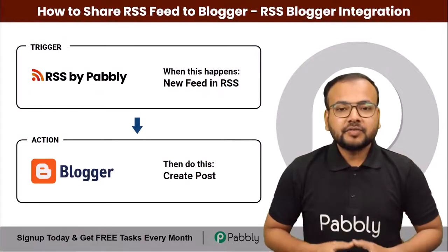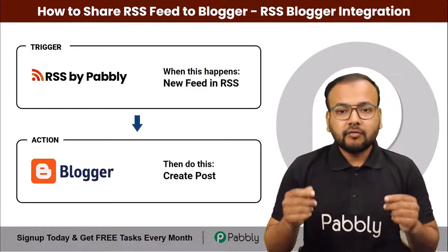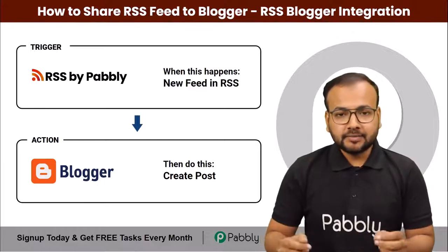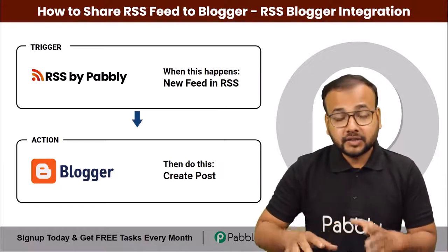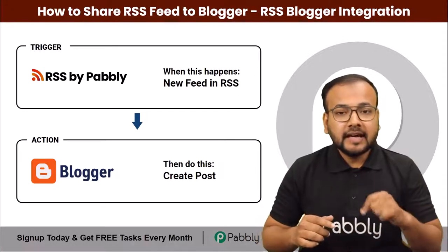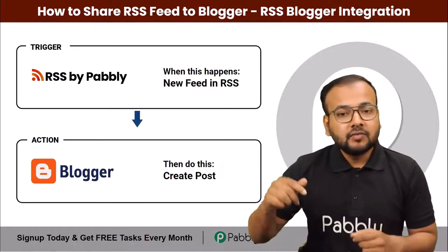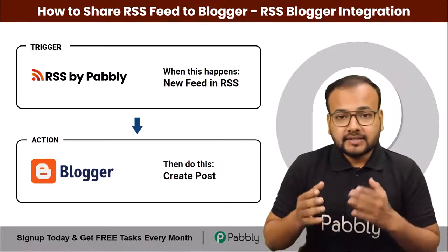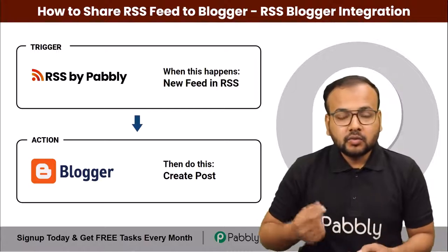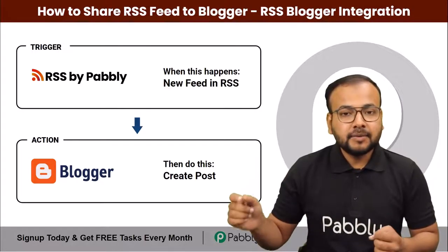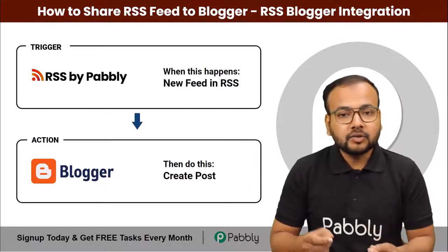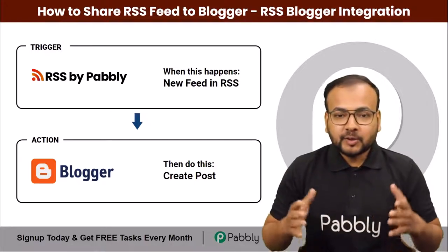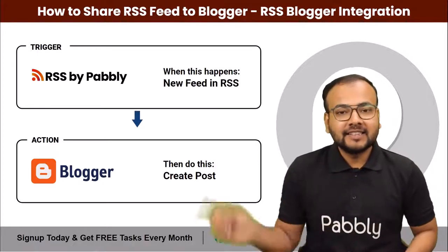This video is for all the bloggers out there. If you are running a blog on Google Blogger and want to improve user engagement by sharing RSS feeds of different websites into your blog, this automation can be really helpful. We are going to connect the RSS feed of any website as the trigger and Google Blogger as the action, so that whenever there is a new RSS feed item, it will be shared to your Google Blogger automatically — saving you from manually copying and pasting data.